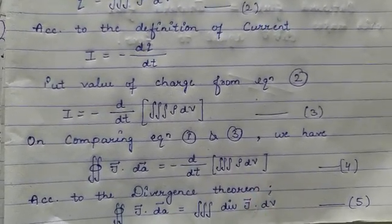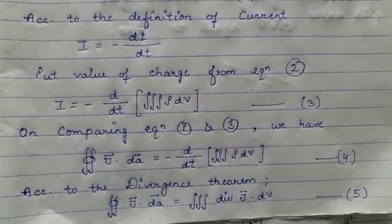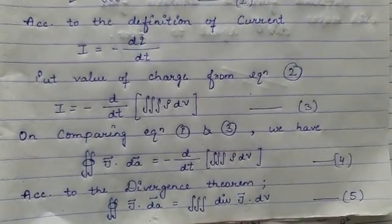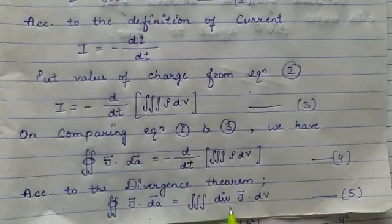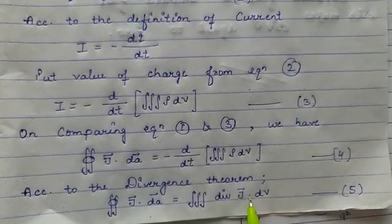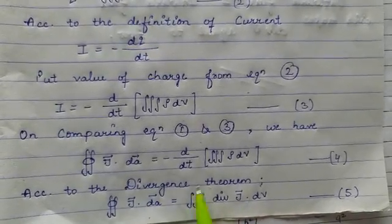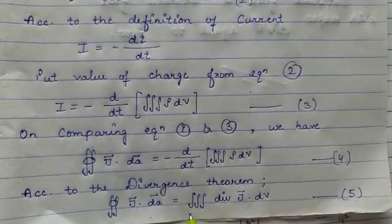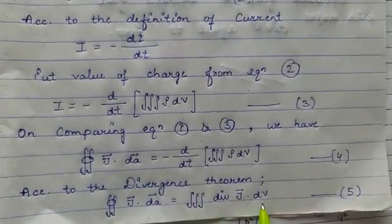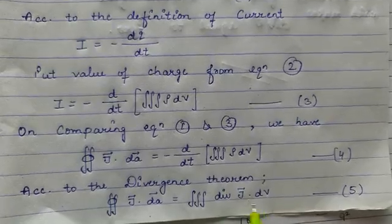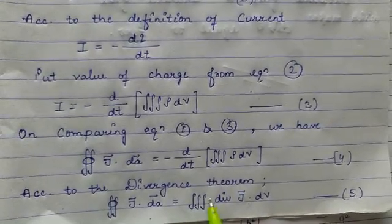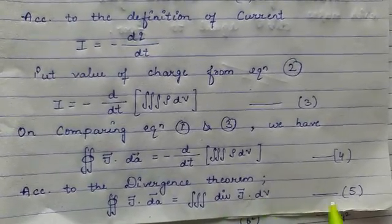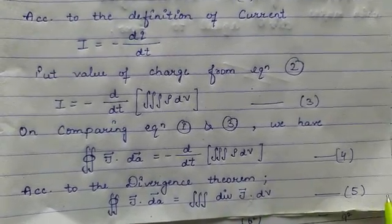Now, according to the divergence theorem, the closed surface integral of J·dA is equal to the triple integral of the divergence of J dV. Write it as equation number 5.